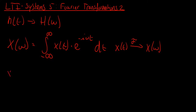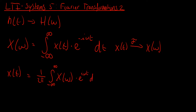We can also go back, which is called the inverse Fourier transformation. It has a normalization constant of 1 over 2π, because we go from the frequency domain back to the time domain, where we have X(ω) and this time we multiply with e to the power of i omega t — not minus — d omega. This is called the inverse Fourier transformation.